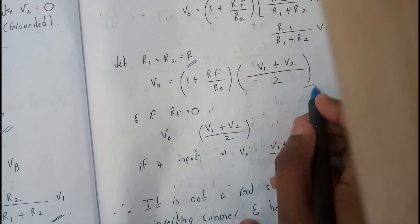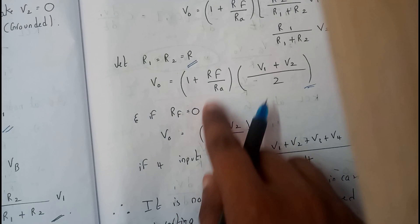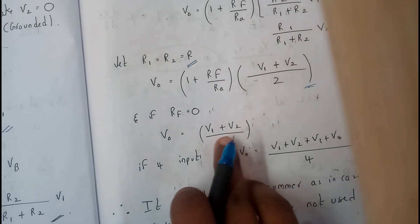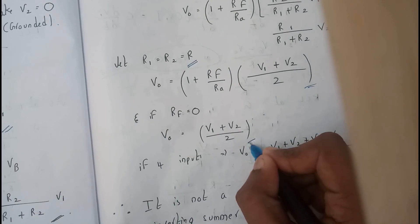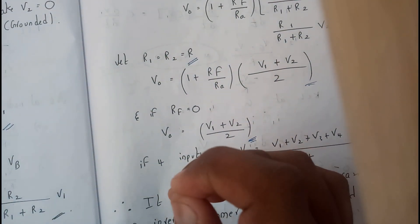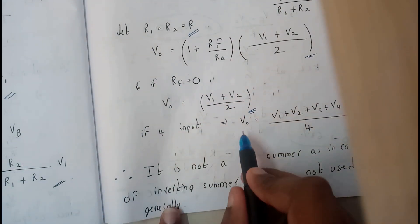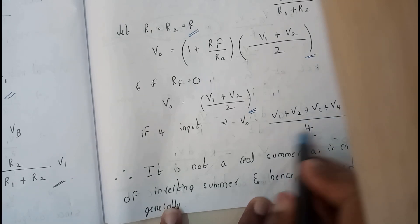At the end we got this equation. Now let us assume that in the feedback network Rf is equals to 0. We get 1 by Ra into this. If there are four inputs then the equation will be like this: V0 is equals to V1 plus V2 plus V3 plus V4 by 4. Is this the exact addition or at least is this the exact addition?